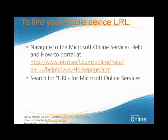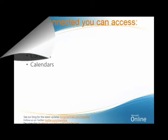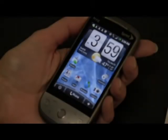Navigate to the Microsoft Online Services Help and How-To Portal at the link here — you can pause the video to see it — and search for URLs for Microsoft Online Services. When connected, you can access email, contacts, and calendars, all from your HTC Hero.